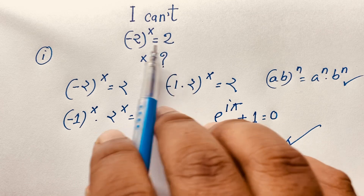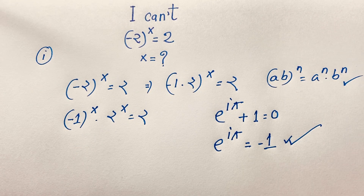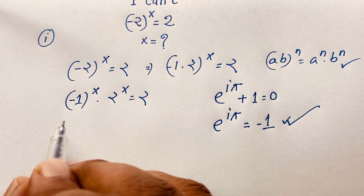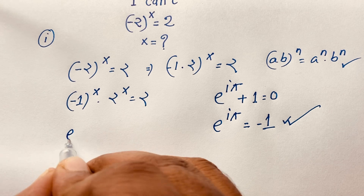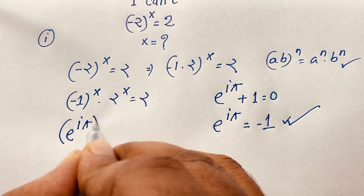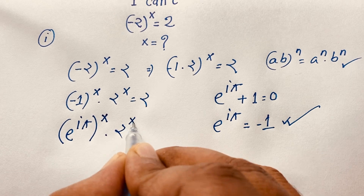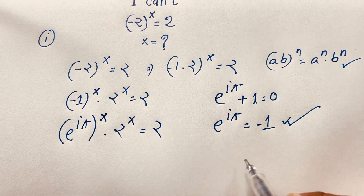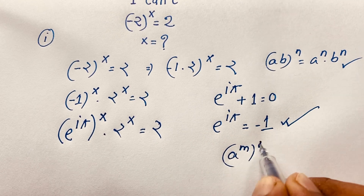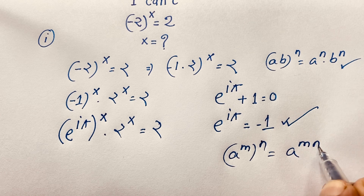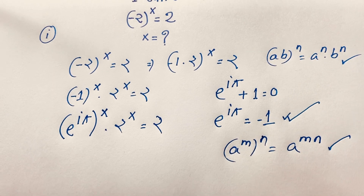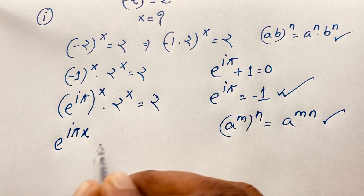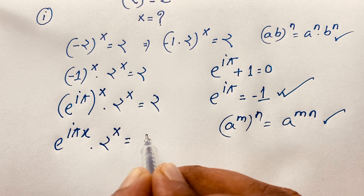Note that if you use log on both sides of (-2)^x = 2 directly, you can't find a real solution. So instead, substituting -1 = e^(iπ), we get (e^(iπ))^x times 2^x = 2. Using the power rule (a^m)^n = a^(mn), this becomes e^(iπx) times 2^x = 2.